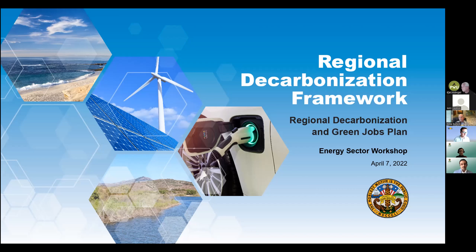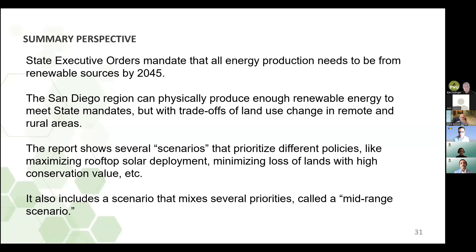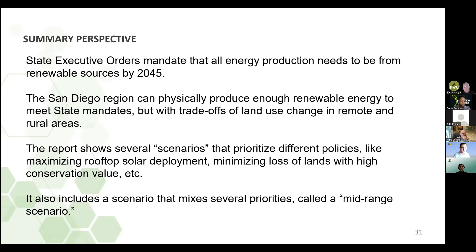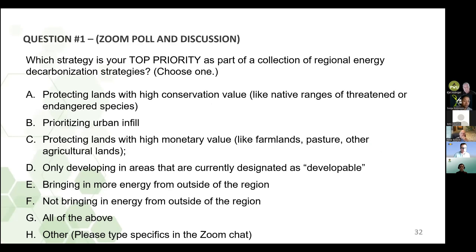Es un buen ejemplo de que aunque estamos viendo los cuatro sectores del RDF, reconocemos que hay una conexión entre ellos. Seguiremos recordando sobre las oportunidades que habrá para hacer esas conexiones. También quisiéramos saber de todos: el Estado exige que toda la producción de energía proceda de fuentes renovables para el 2045. La región de San Diego puede producir físicamente suficiente energía renovable para cumplir los mandatos del Estado, pero con contrapartidas del cambio de uso del suelo en zonas remotas y rurales. El informe muestra varios escenarios que priorizan diferentes políticas, como maximizar el despliegue solar en los tejados, minimizar la pérdida de tierras con alto valor de conservación, entre otros.